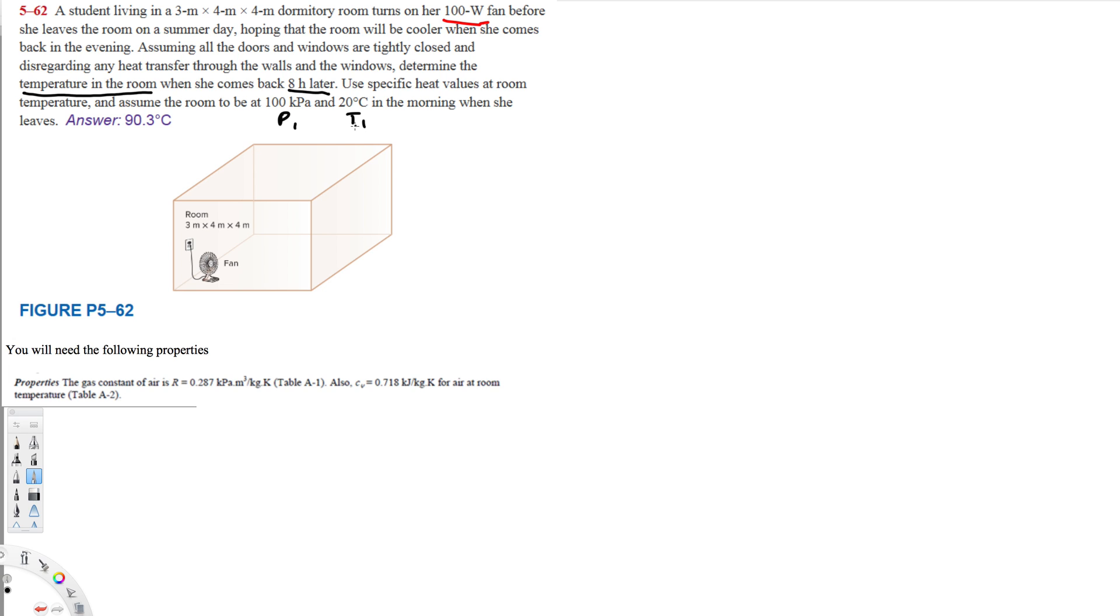First of all, if we have an isovolumetric or isochoric process with constant volume, we can use Q equals m Cv delta T. This is the equation we can use to find Q.